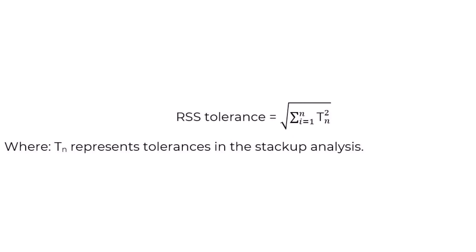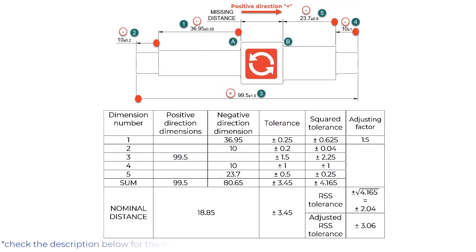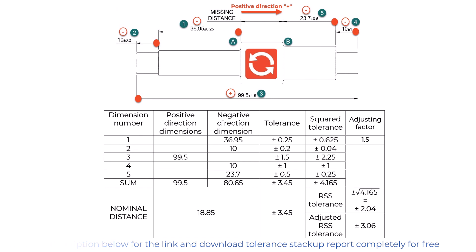RSS tolerance can be calculated with the following formula: RSS tolerance = √(Σ TN²), where TN represents the tolerances in the stack-up analysis. In plain words, the RSS tolerance equals the square root of the sum of all squared tolerances in the stack-up analysis. The starting point for the statistical tolerance stack-up analysis is the same as for the worst-case method — the only difference is that we additionally calculate the squared tolerances for each dimension, add them, and take the square root. The missing distance dimension is 18.85 ± 3.06 millimeters.